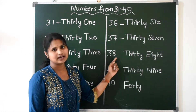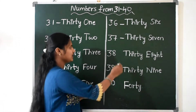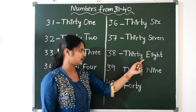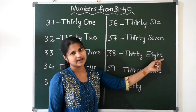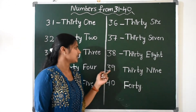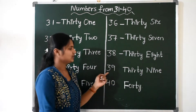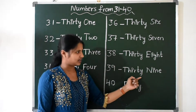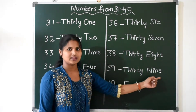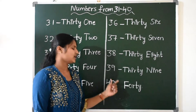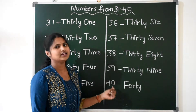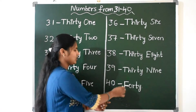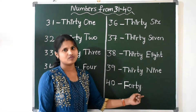Okay, next 38. T-H-I-R-T-Y, THIRTY, E-I-G-H-T, 8. 38. Next number, 39. T-H-I-R-T-Y, THIRTY, N-I-N-E, 9. 39. Next, after 39 — very good — 40! 4-0 makes 40. F-O-R-T-Y. 40.